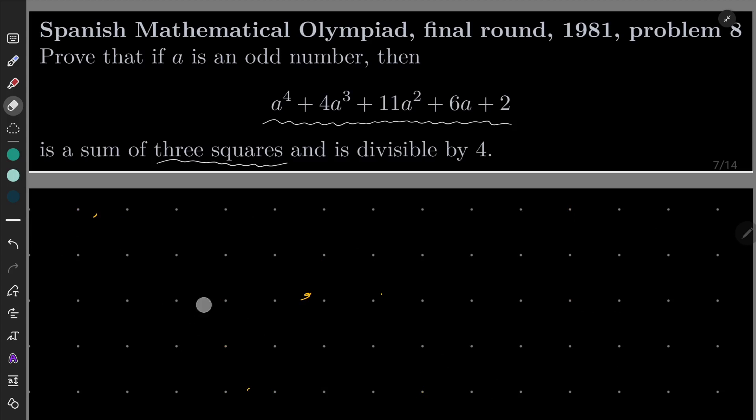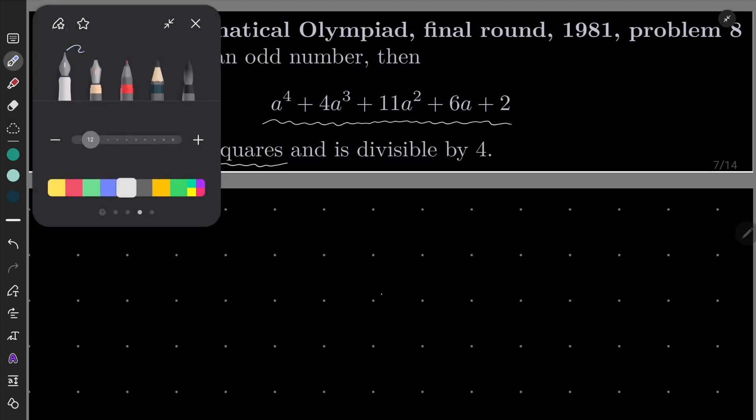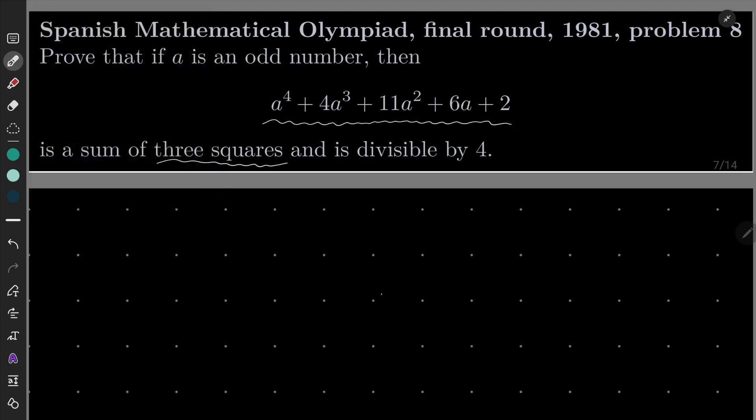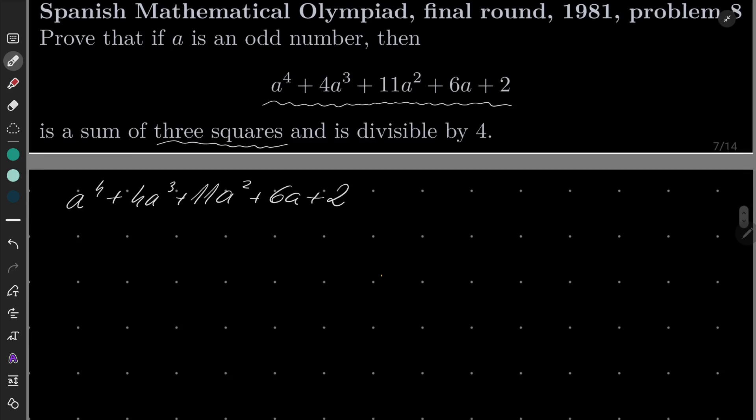Okay, I hope that you've managed to solve this problem. My solution will be as follows. Let's take our number and write it in the following way. I will have a^4 times 4a^3 and now I will split 11 into 6a^2